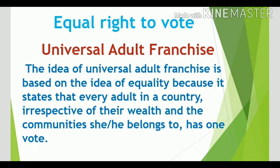In a democratic country like India, everyone has equal right to vote and this is called universal adult franchise. The idea of universal adult franchise is based on the idea of equality because it states that every adult in a country, irrespective of their wealth and the communities she or he belongs to, has one vote. Universal adult franchise means every citizen who is 18 years or above has the right to vote.